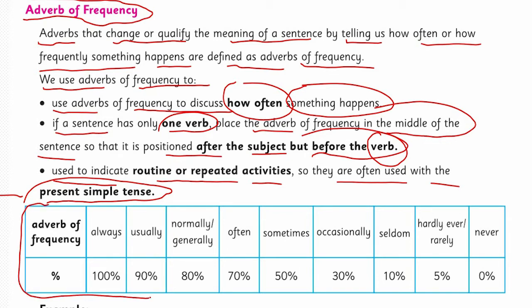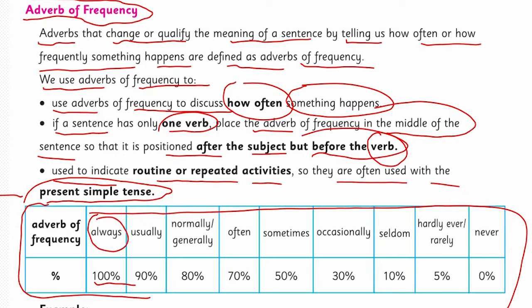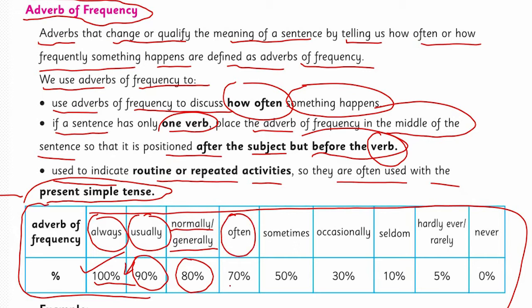یہ آپکا adverbs of frequency کا chart ہے جس میں percentage بھی دی گئی ہے۔ Always: 100% — like 'She always speaks the truth.' Usually: 90% chances ہیں۔ Normally/Generally: 80% chances ہیں۔ Often: 70% chances ہیں۔ Sometimes: کام کبھی کبھی ہوتا ہے — 50% chances ہیں۔